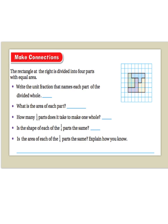Now, let's take this further. The rectangle at the right is divided into four parts with equal area. Write the unit fraction that names each part of the divided whole. To answer that question, I need to know how many parts make up the whole. So, I have 1, 2, 3, 4. So, my whole is going to be 4. And, the smallest piece of that whole will be 1. So, my unit fraction is 1 fourth.